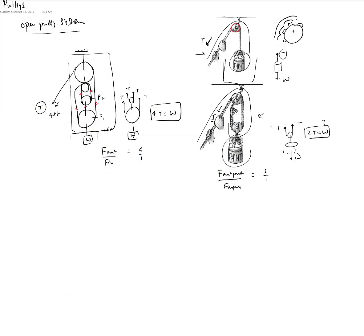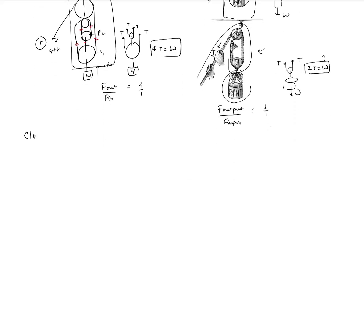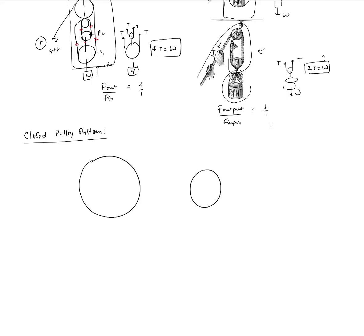Now let's look at another kind of pulley system, which we call a closed pulley system. In a closed pulley system, you have the rope or belt going all around, but it completes the circuit. Let's say you have a smaller pulley and a bigger pulley pivoted at points A and B, and then you have a belt that goes all around them.